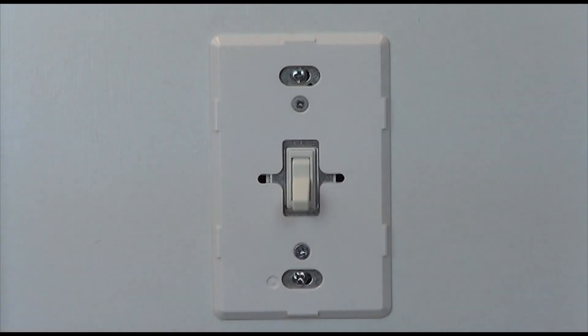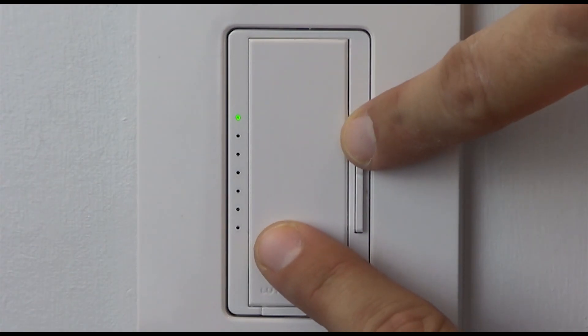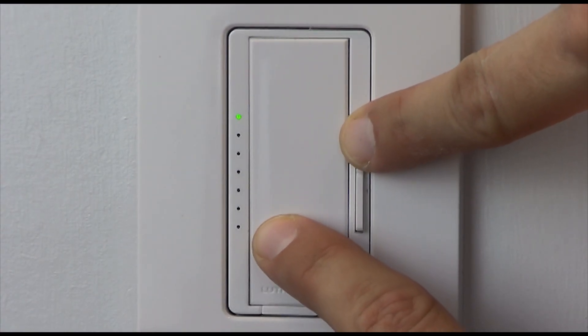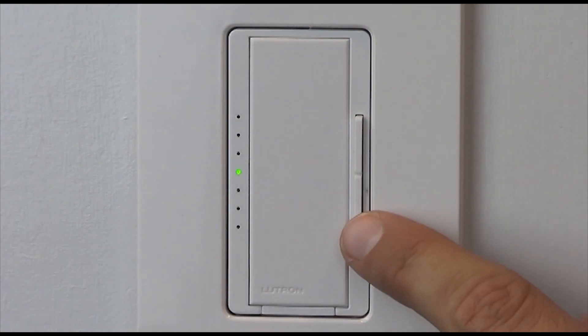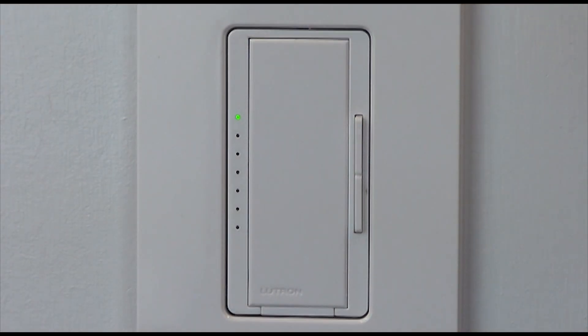Lastly, you will need to program your dimmer to work with the mechanical three-way switch. To do this, go to the dimmer and press and hold the tap switch along with the raise button until the middle LED starts to blink. Press the lower button once and the bottom LED will begin to blink. Press the tap switch once to save this setting.